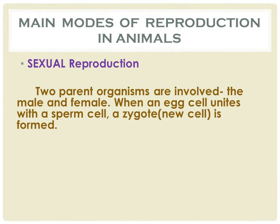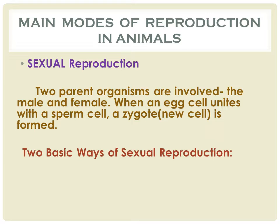There are two main modes of reproduction in animals. First is sexual reproduction, where the male and female parent organisms are involved. There are two ways in which the gametes are brought together: external fertilization and internal fertilization.